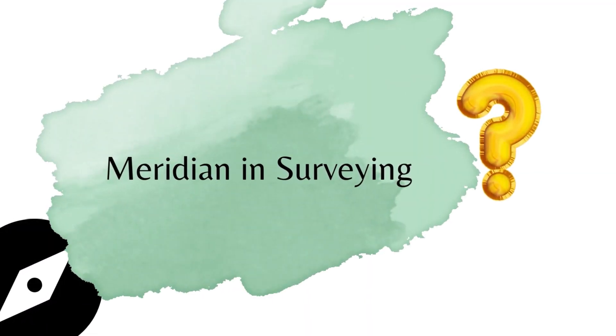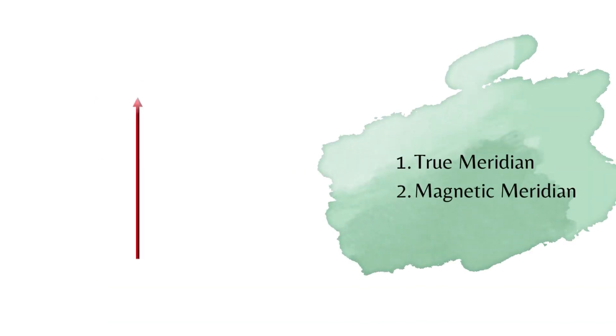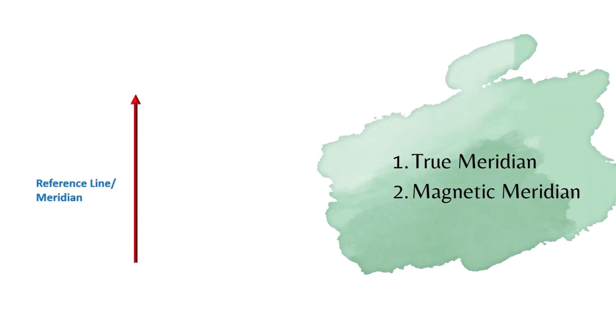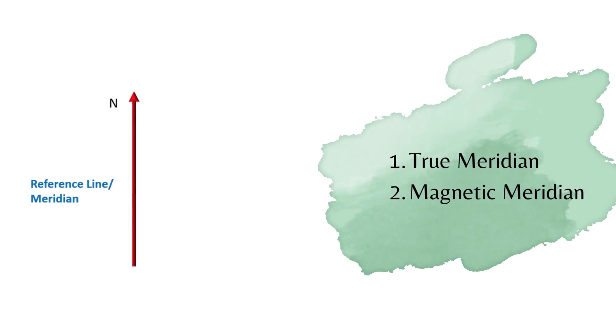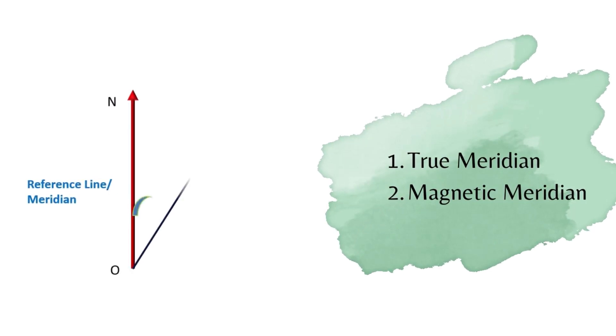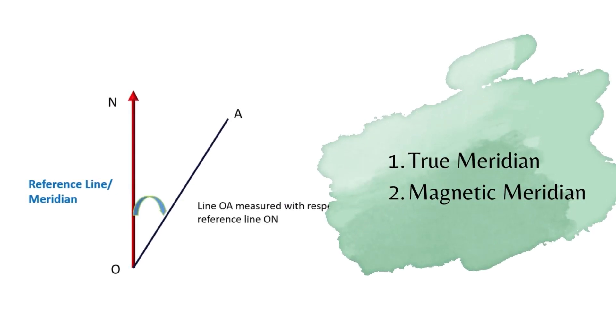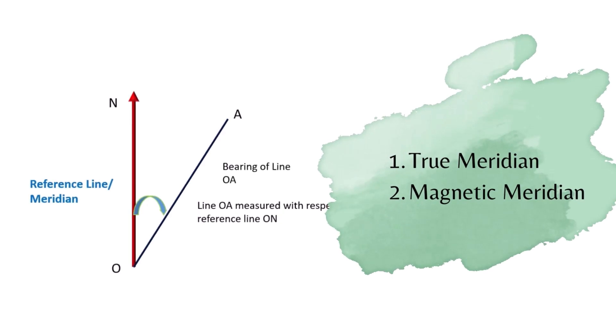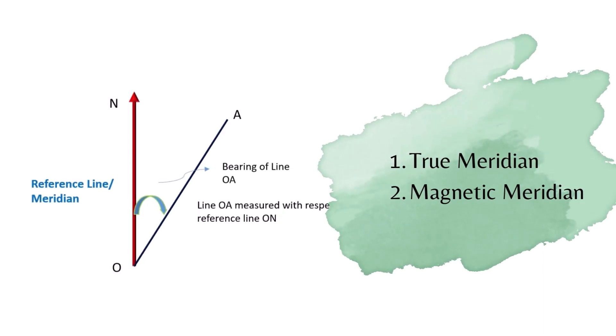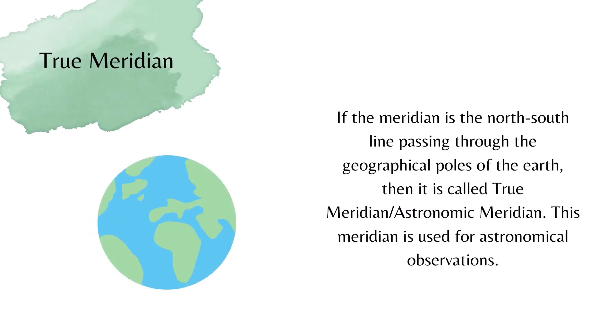Meridian is defined as a fixed line of reference that can be any line in the survey or an imaginary line. There are several classifications for meridians, but here we are going to explain two main types: true meridian and magnetic meridian.